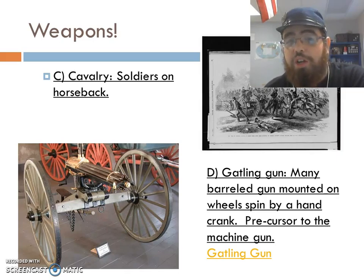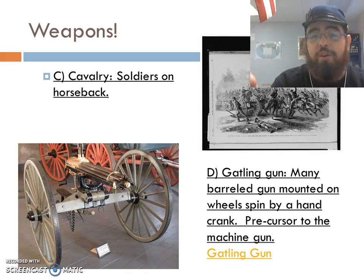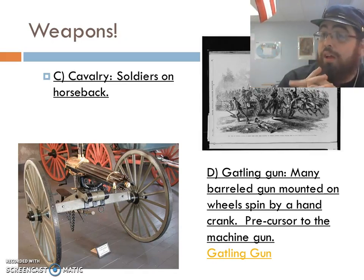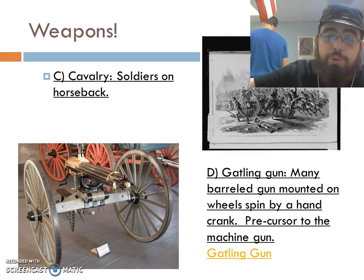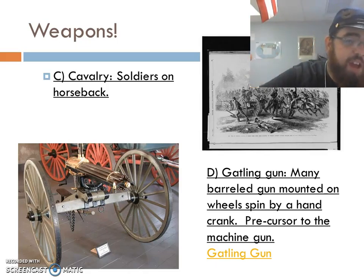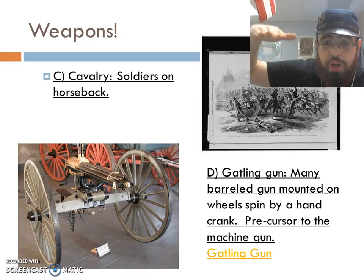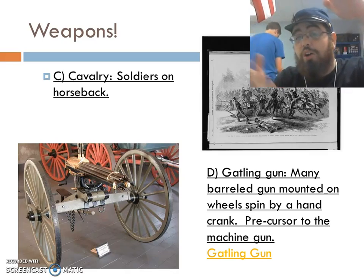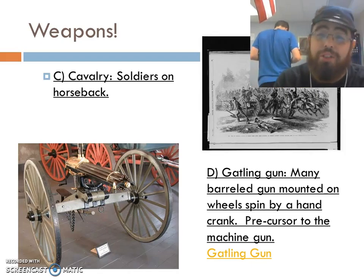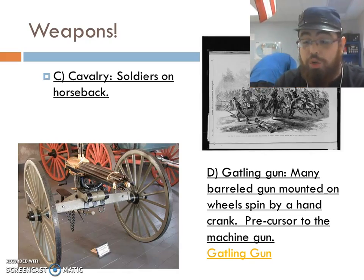From there we have our cavalry — soldiers on horseback, pretty simple and self-explanatory. We also have the Gatling gun, one of my favorite weapons. It's a multi-barreled gun mounted on wheels, spun by hand using a hand crank. As you spin the crank, the barrels spin and shoot multiple rounds — one per barrel. The faster you spin it, the faster it shoots. At the top is a magazine fed vertically, and you'd usually have a second person feeding the magazine and dumping water on the barrels to keep them cool. This was a precursor to the machine gun, like the Browning, which we'll see later in World War One and World War Two.